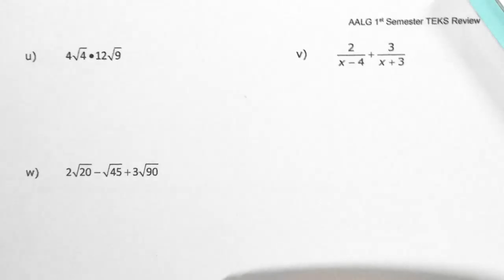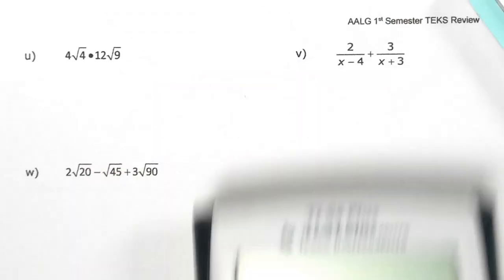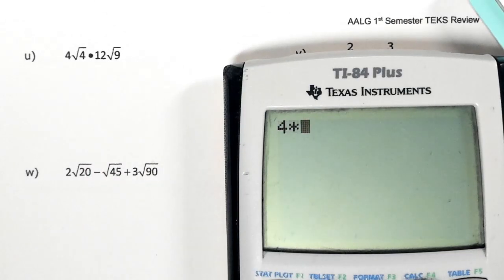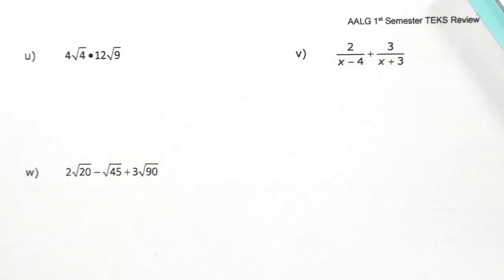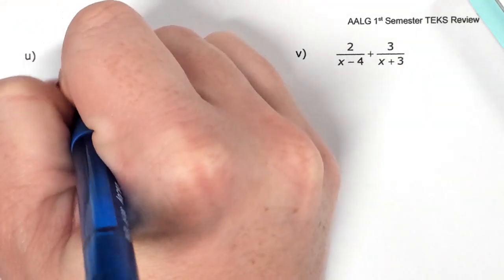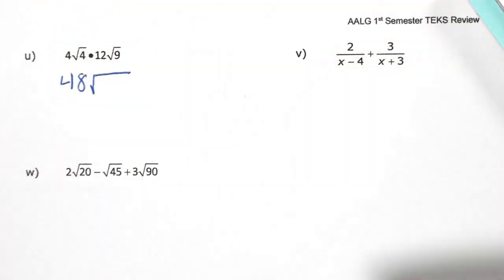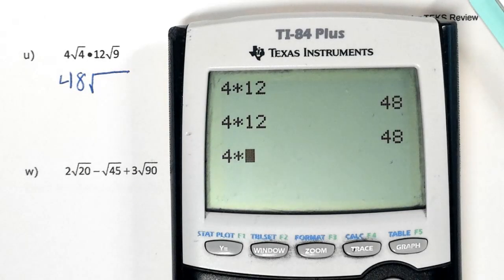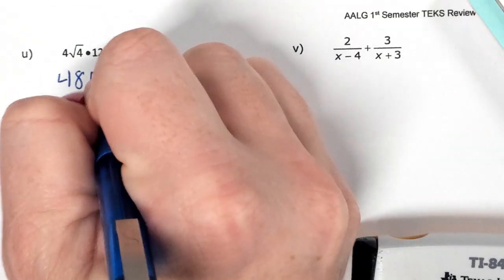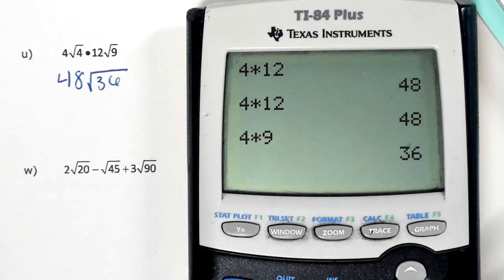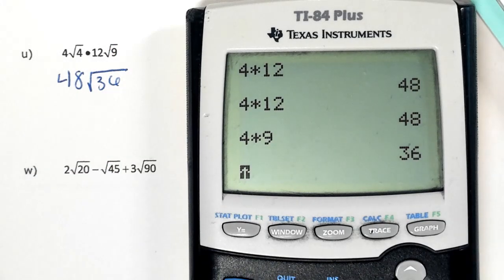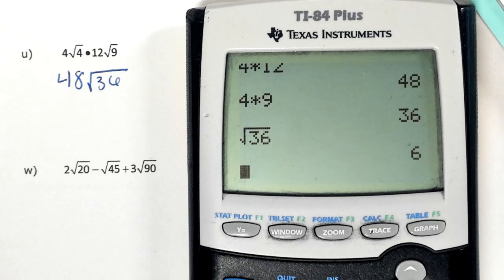Okay, so we're multiplying. Remember when you're multiplying radicals, the outside numbers multiply and inside numbers multiply. So 4 times 12 is 48, and then 4 times 9, which are both perfect squares. You could have just done it first or second. And then we know that the square root of 36 is a perfect square of 6.